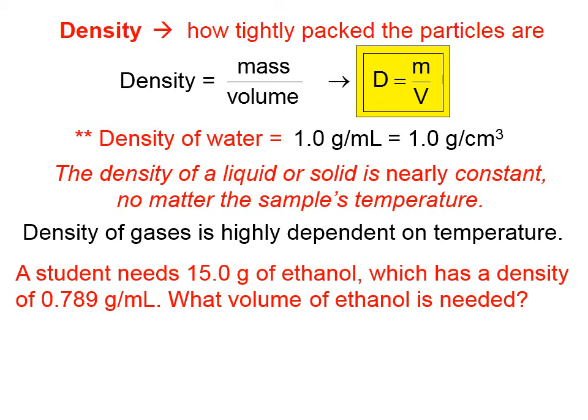A student needs 15.0 grams of ethanol, which has a density of 0.789 grams per milliliter. What volume of ethanol is needed? If we start with the density relation, we're after volume. So, let's do a little algebraic manipulation and solve this for volume. I trust you can do that. And now, we have the mass and we have the density.